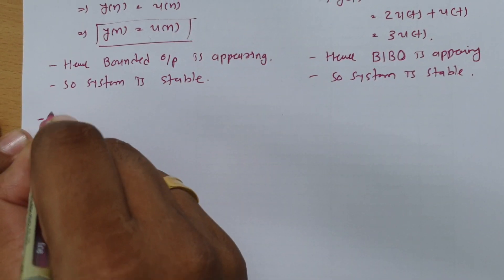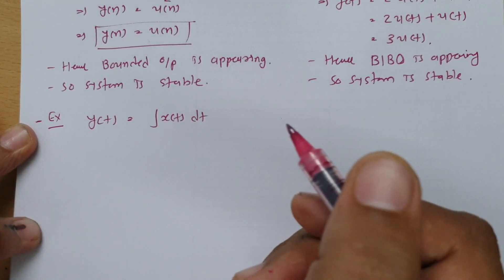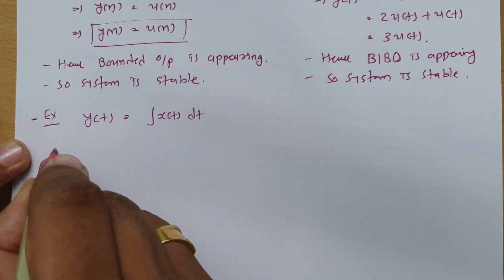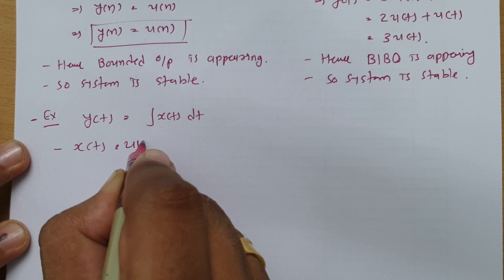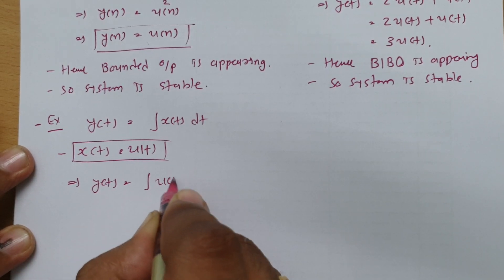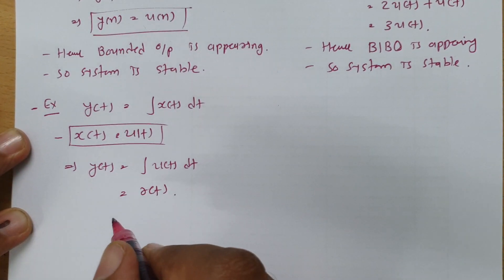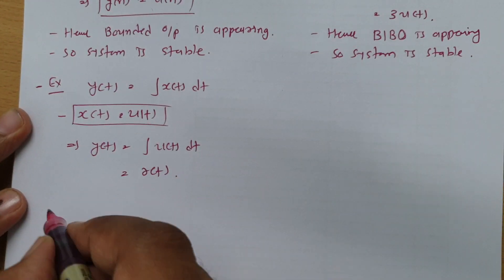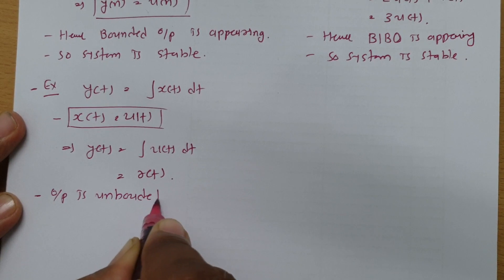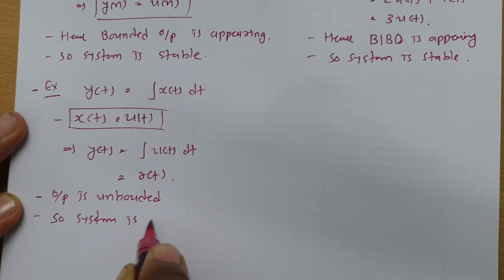Let us have one more case. If the output y(t) is the integration of x(t), and we place x(t) = u(t), then the output will be y(t) = ∫u(t)dt, which is a ramp signal r(t). A ramp signal is not bounded, so the output is unbounded, and we can say the system is unstable.